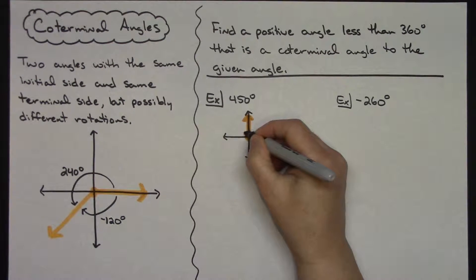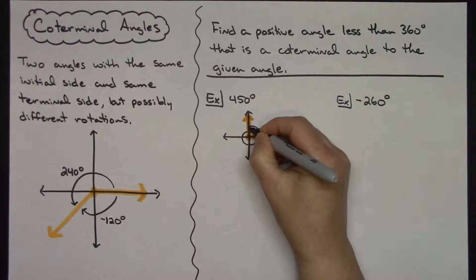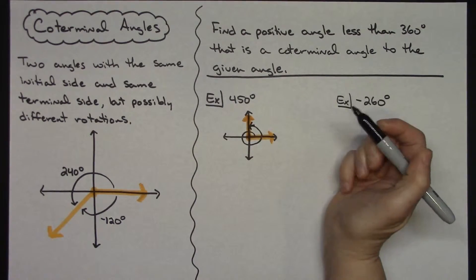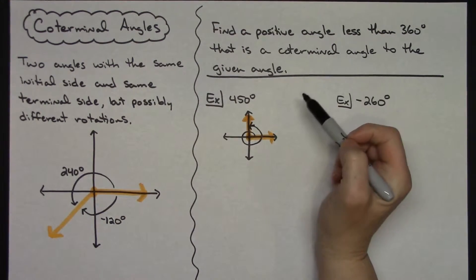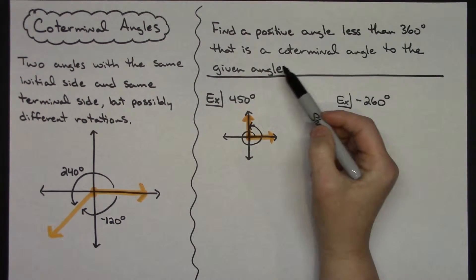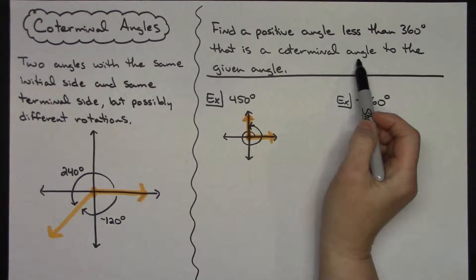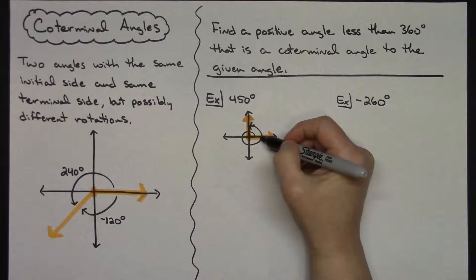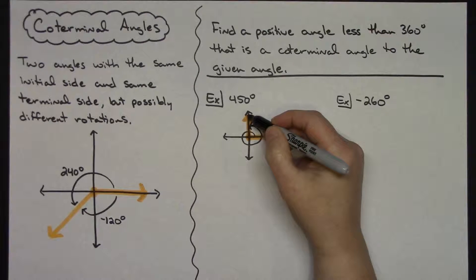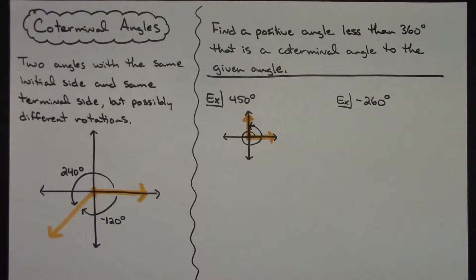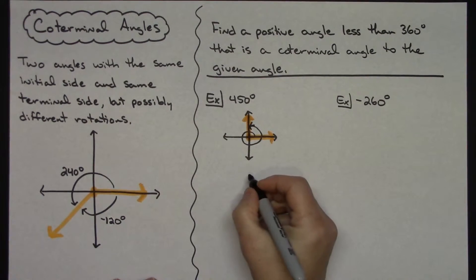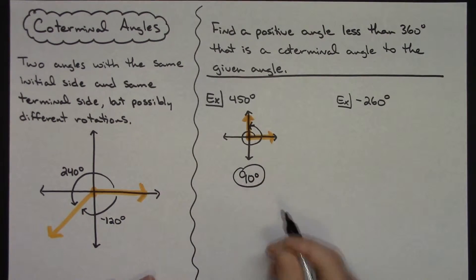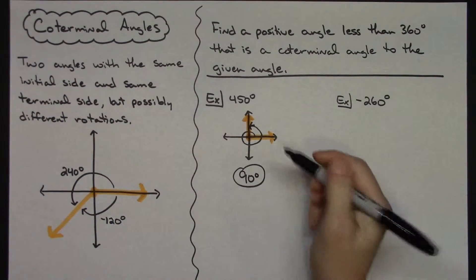We went all the way around plus a little bit more. My directions say find a positive angle less than 360 that is co-terminal. For co-terminal it needs the same initial side and same terminal side, so visually you can see this is just going to be a 90 degree angle. The answer is 90 degrees.